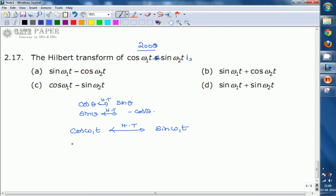Similarly, sin ω₂t Hilbert transform is minus cos ω₂t. If we combine this one, now the answer equals sin ω₁t minus cos ω₂t. This is the answer.